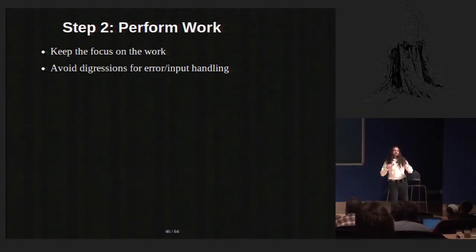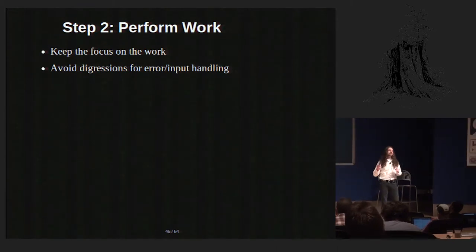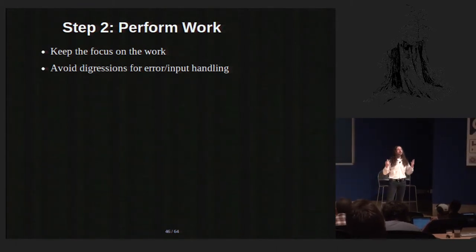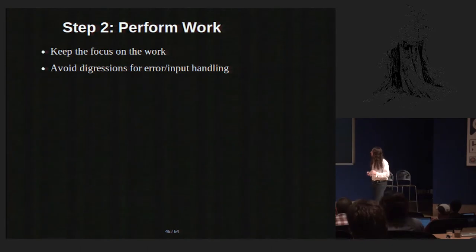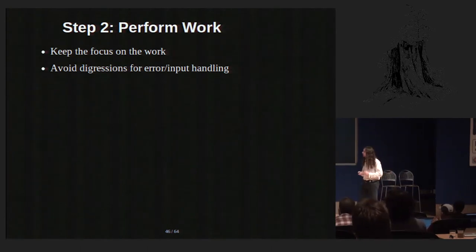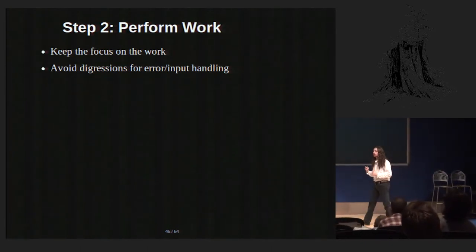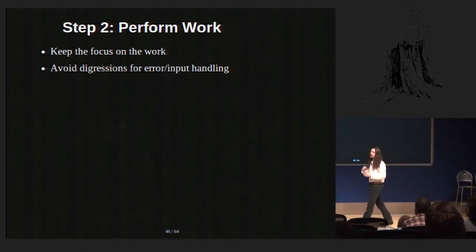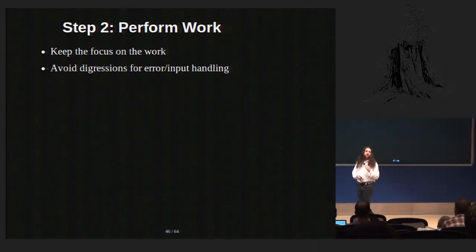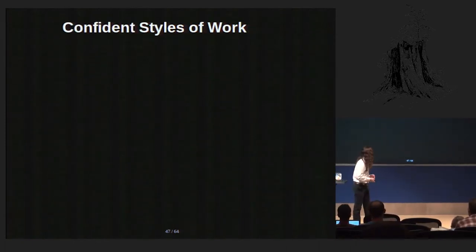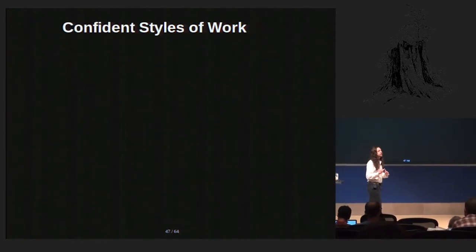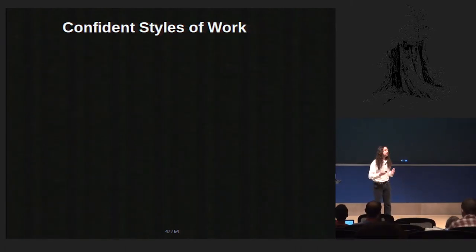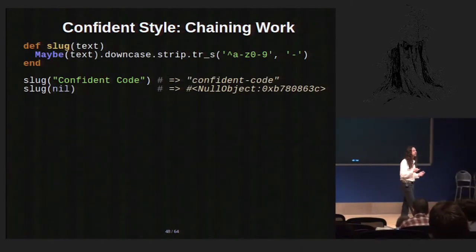The second step, the second of these four parts of a method, is performing work. Here I just like to keep the focus on the work and not on the other parts of the method. There are a couple of confident styles of work that lend themselves to confident code. The first is chaining work. We saw that a little bit earlier with the null object, and that's why it's nice — it gives you a way to very easily say, do all this stuff if this initial value is here.